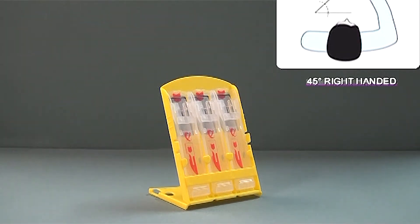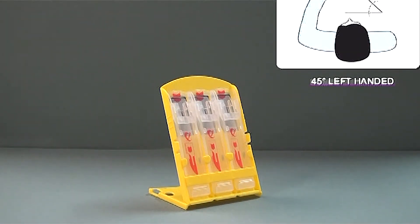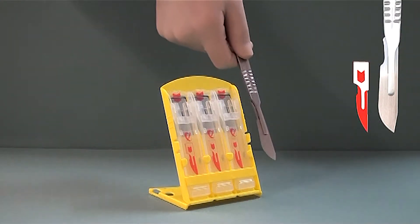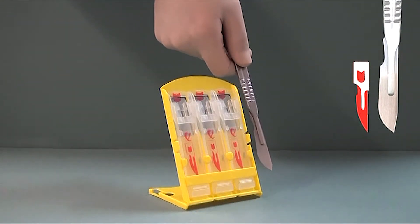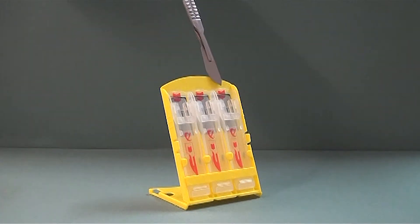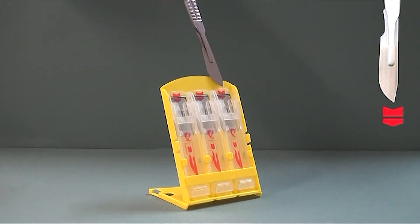On the cartridge you will see there are two instructional symbols in red. The red scalpel blade symbol indicates which way the blade must face. The red landing pad symbol helps guide the blade into the correct area of the chosen cartridge.